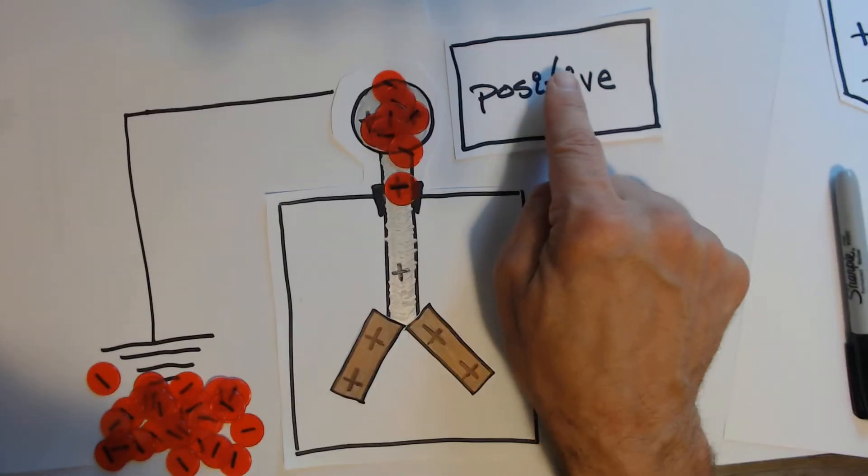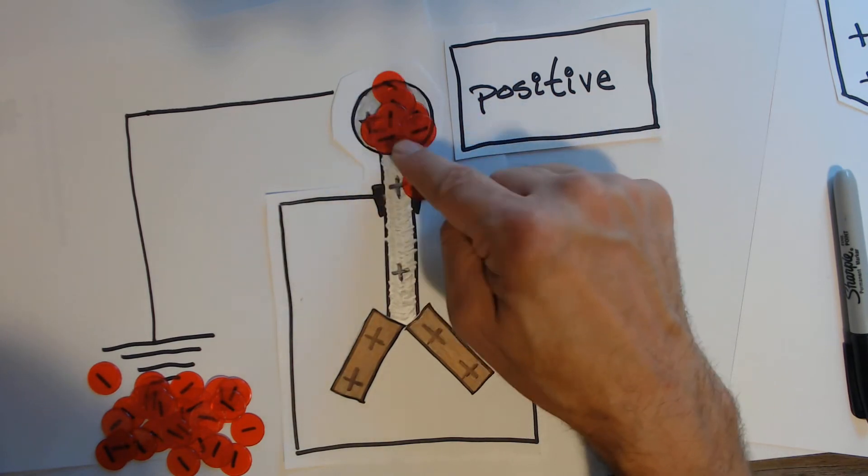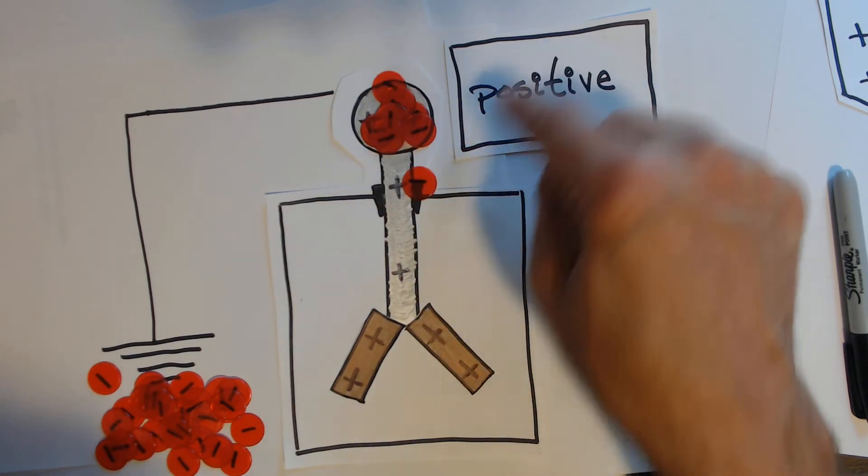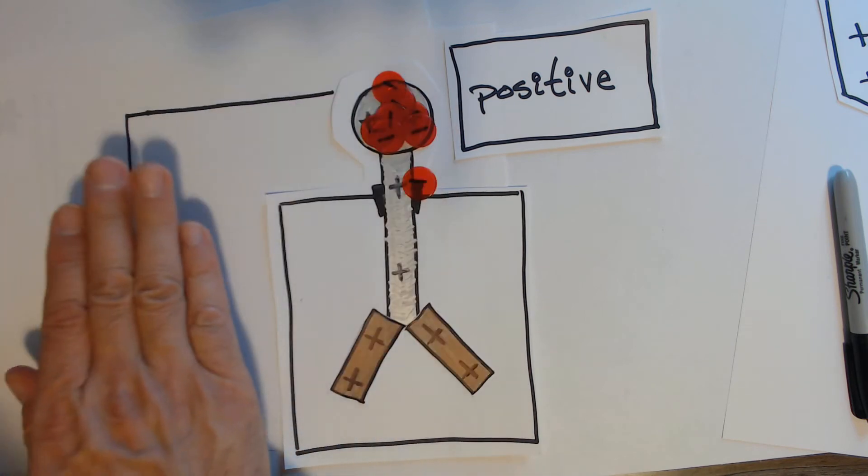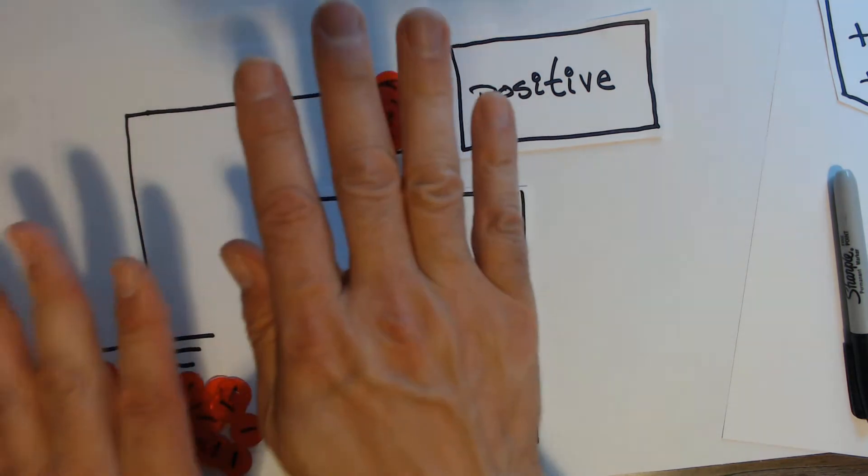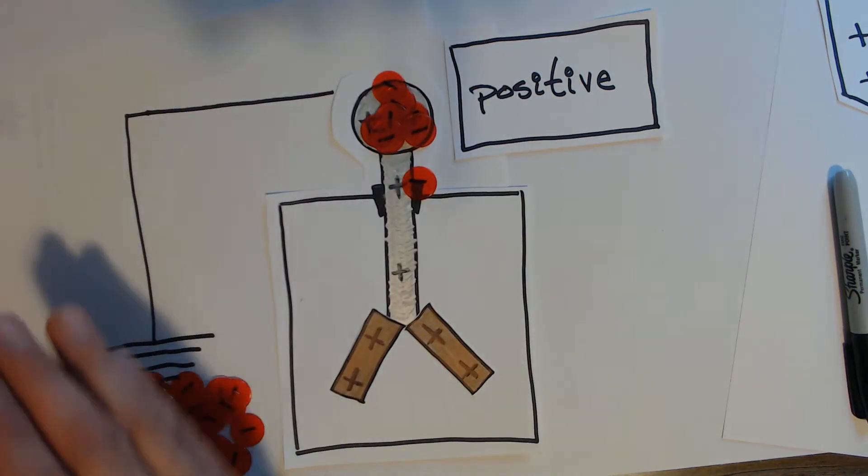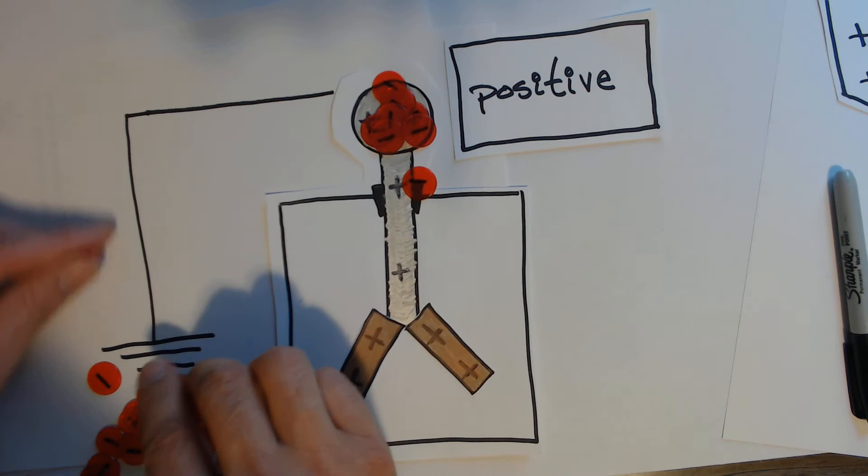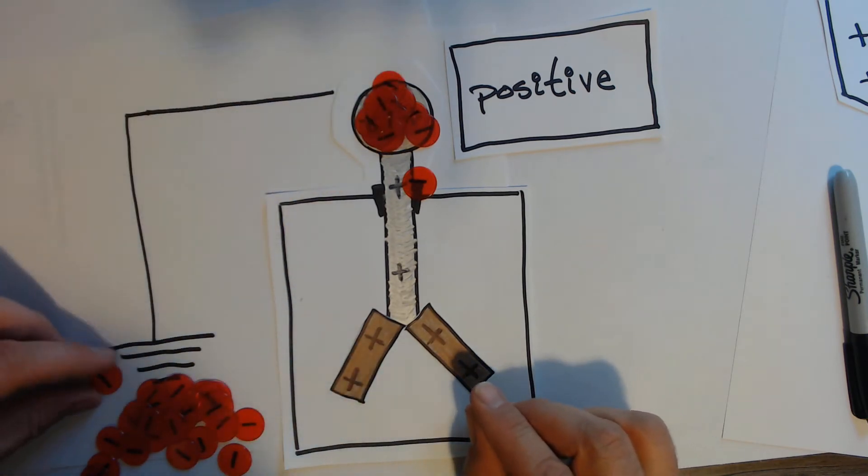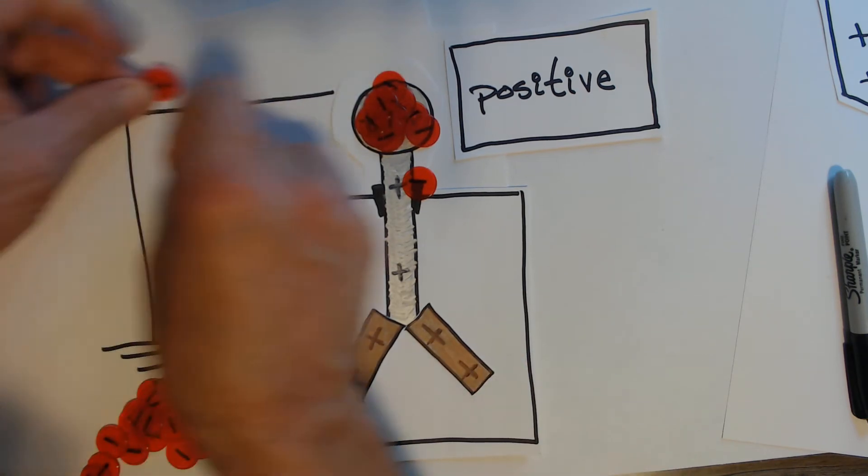These guys can't move, the positives can't move, but the negatives can. So since the electroscope and ground are attached, they're all one object, so the electrons in the one object will all be attracted to the positive. So extra electrons will be attracted up to the positive.